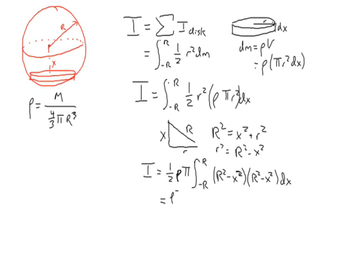So you have rho pi over 2, integral from negative r to r of big r to the fourth minus 2 big r squared x squared plus x to the fourth dx. Now you can integrate this.